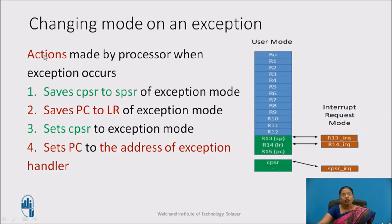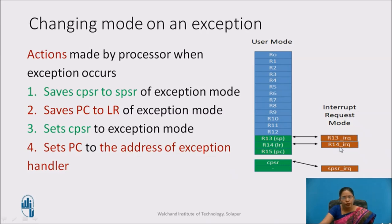Changing mode on an exception: the actions taken by the processor when an exception occurs are — first, it saves the CPSR to the SPSR of the exception mode. Then it saves the PC to the LR of the exception mode. Note that the exception mode LR is different from the user mode R14 LR; it is the banked register indicated by, for example, underscore IRQ for interrupt request mode. Then it sets the CPSR to exception mode, and finally sets the PC to contain the address of the exception handler.